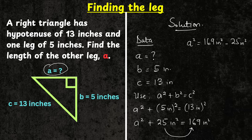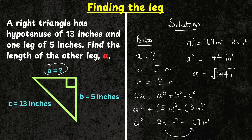Doing so gives us A squared equals 169 inches squared minus 25 inches squared. Subtracting 25 from 169 gives A squared equals 144 inches squared. To isolate A we take the square root of both sides, which gives A equals the square root of 144 inches squared. Therefore A equals 12 inches. We have found the length of the other leg using the Pythagorean theorem, given one leg and the hypotenuse.